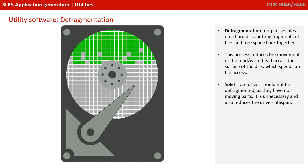Defragmentation utilities reorganize files on a hard disk. They put the fragments of files back together and collect free space, which reduces the movement of the read-write head across the surface of disks and speeds up access to files. Solid state drives should not be defragmented — it's unnecessary because they have no moving parts and can already access files very quickly. Defragmenting them actually reduces their lifespan due to the way those devices work.